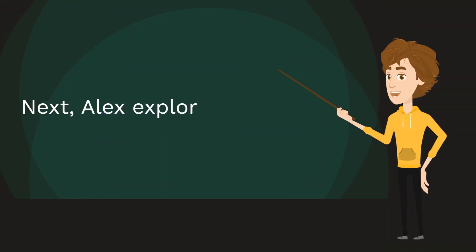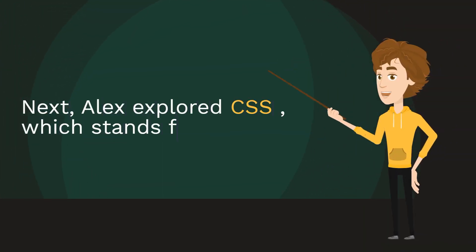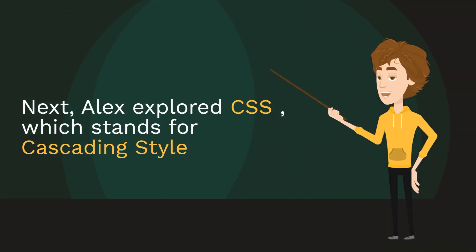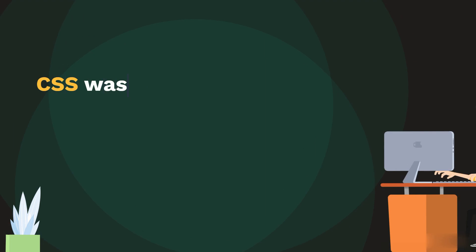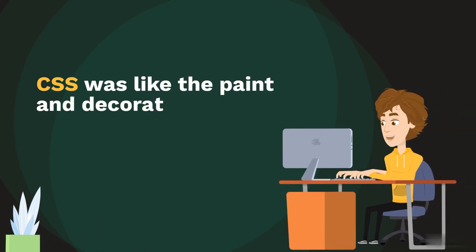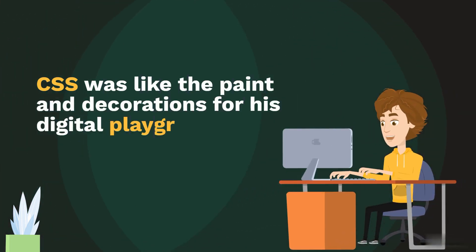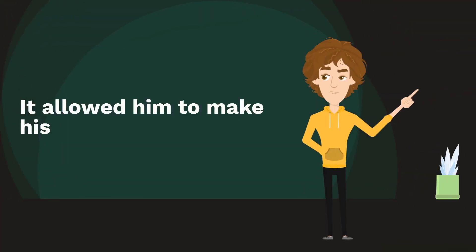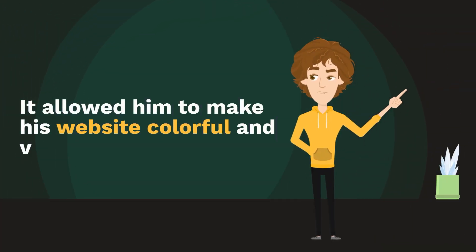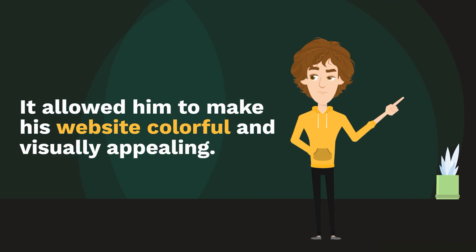Next, Alex explored CSS, which stands for Cascading Style Sheets. CSS was like the paint and decorations for his digital playground. It allowed him to make his website colorful and visually appealing.